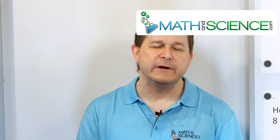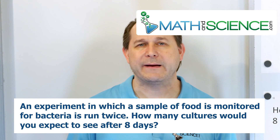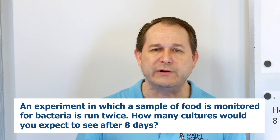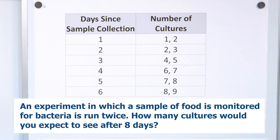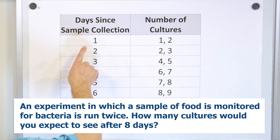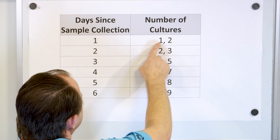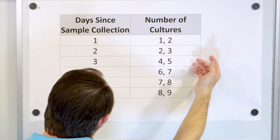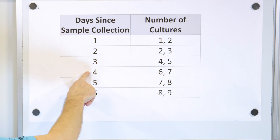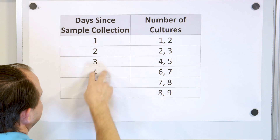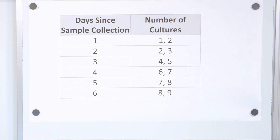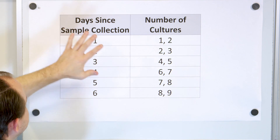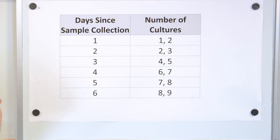Let's talk about the first example. We run an experiment with a sample of food, and we monitor it for bacteria to see how many different bacterial cultures we find after a certain number of days. We run this experiment two times. The best thing to do in this case is draw a scatterplot to visualize what's going on.